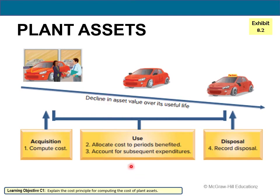We'll also account for subsequent expenditures like repairs and maintenance, betterments, and things of that nature. If you have a car, you'll have to put tires on it, you may have to overhaul the engine, or put in a new transmission. We'll learn to account for those types of things as well. And when an asset is used up, we'll learn how to journalize the disposal. That's our roadmap for this chapter.